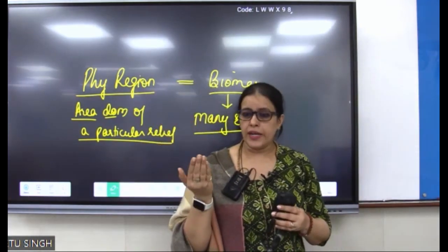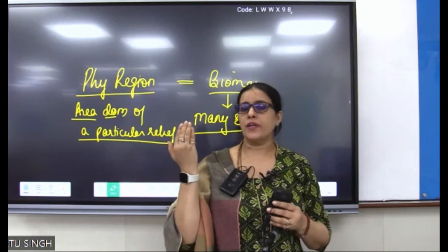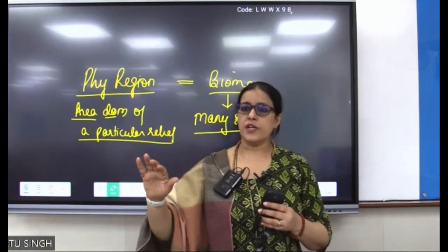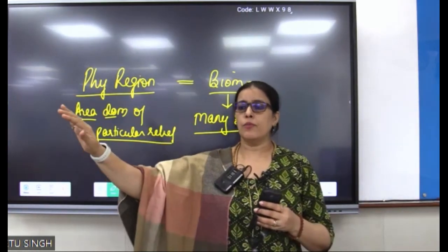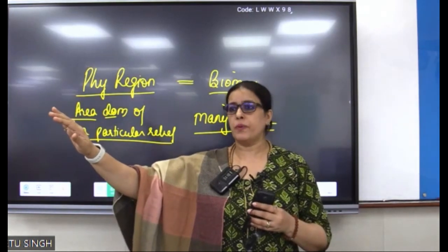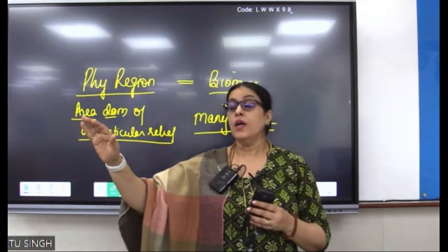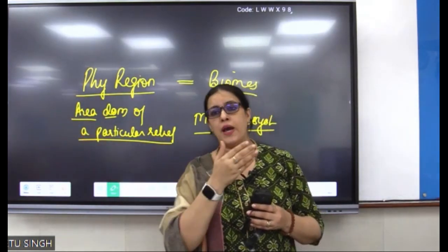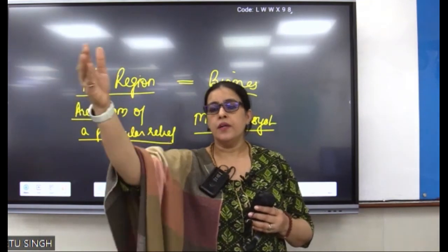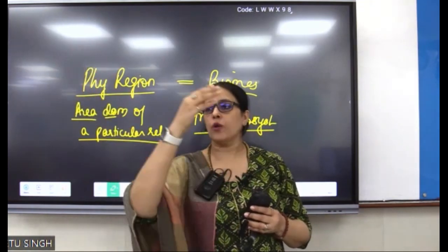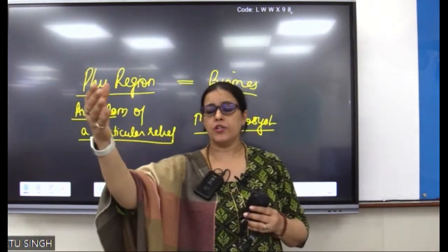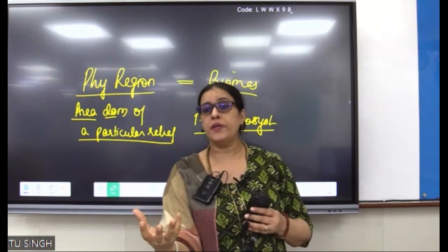I go to Sariska, Ranthambore — I am in a drier, desert peripheral area. I go to Manas, Kaziranga, or I go to Periyar — I am right there with the para-moist climatic location. Go to Plateau interiors, Panna — map site number 12.